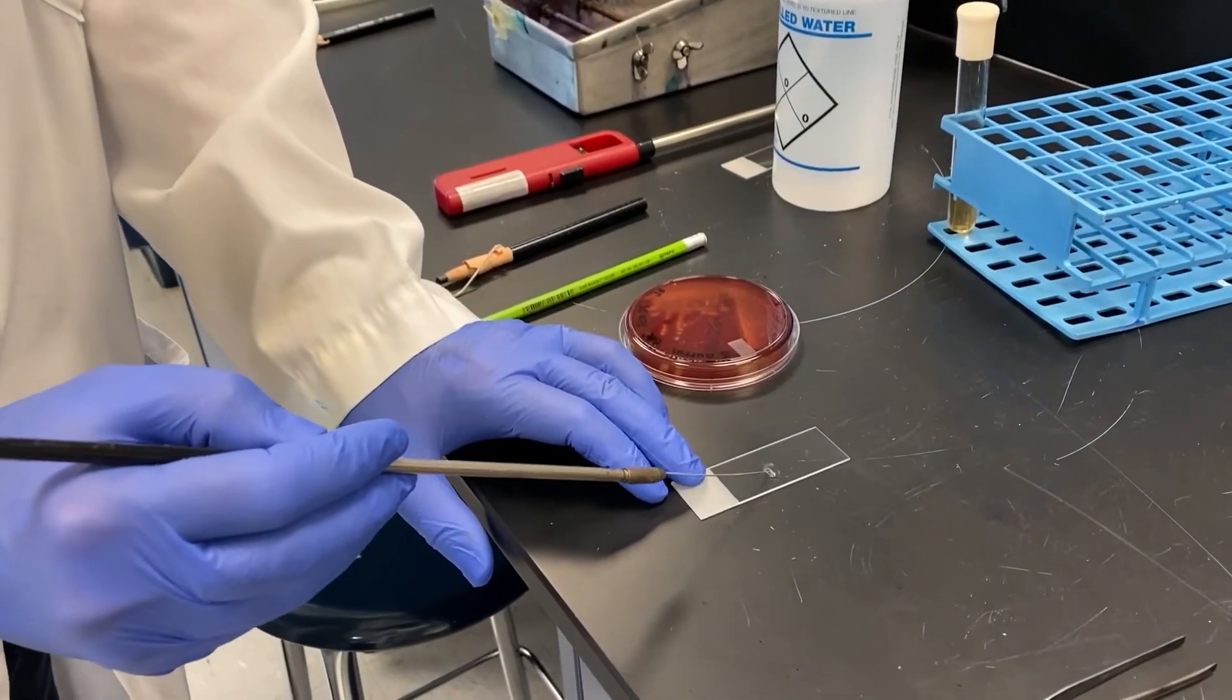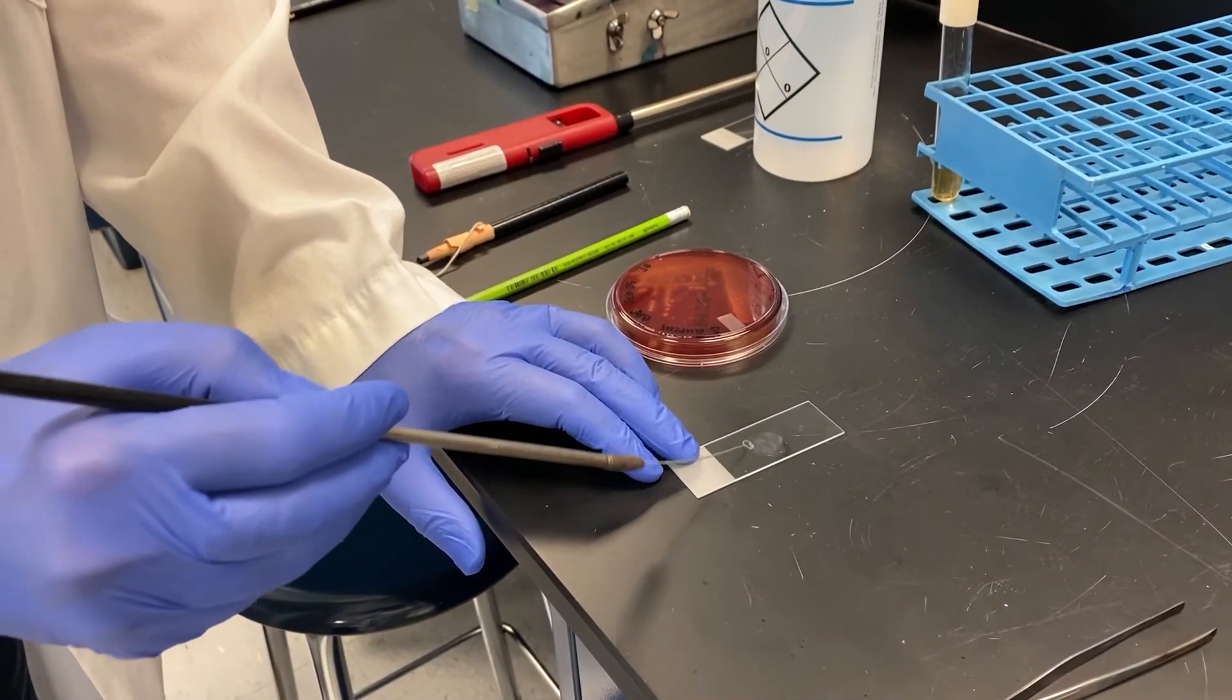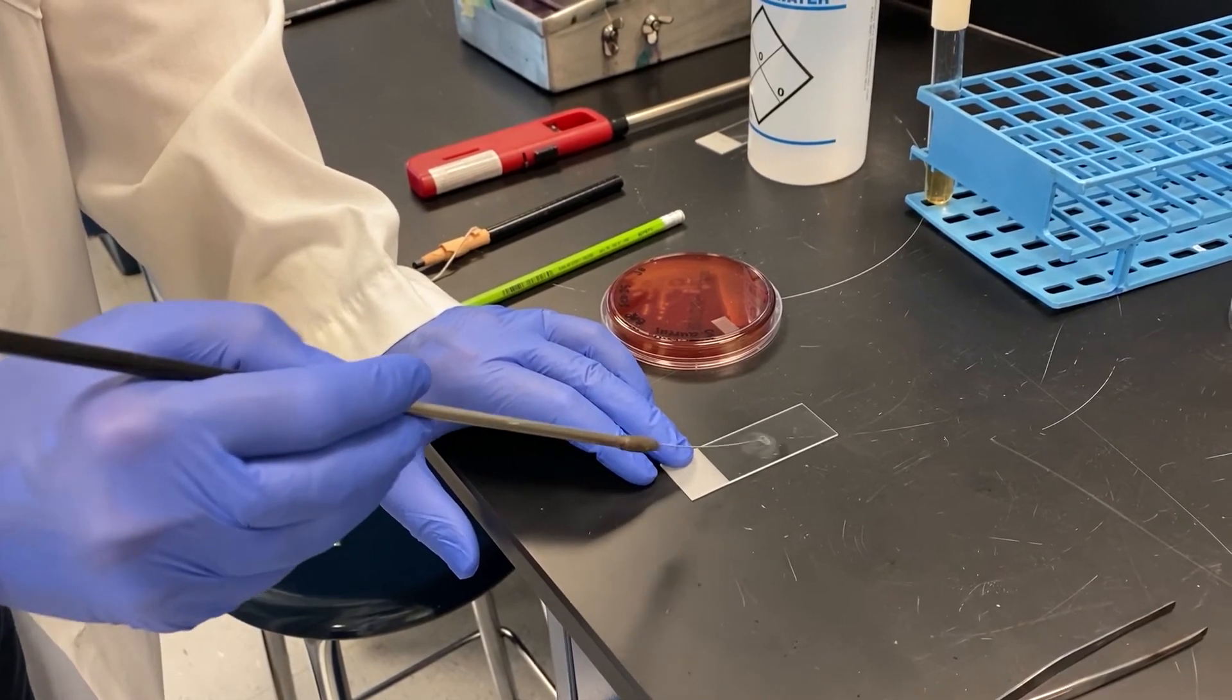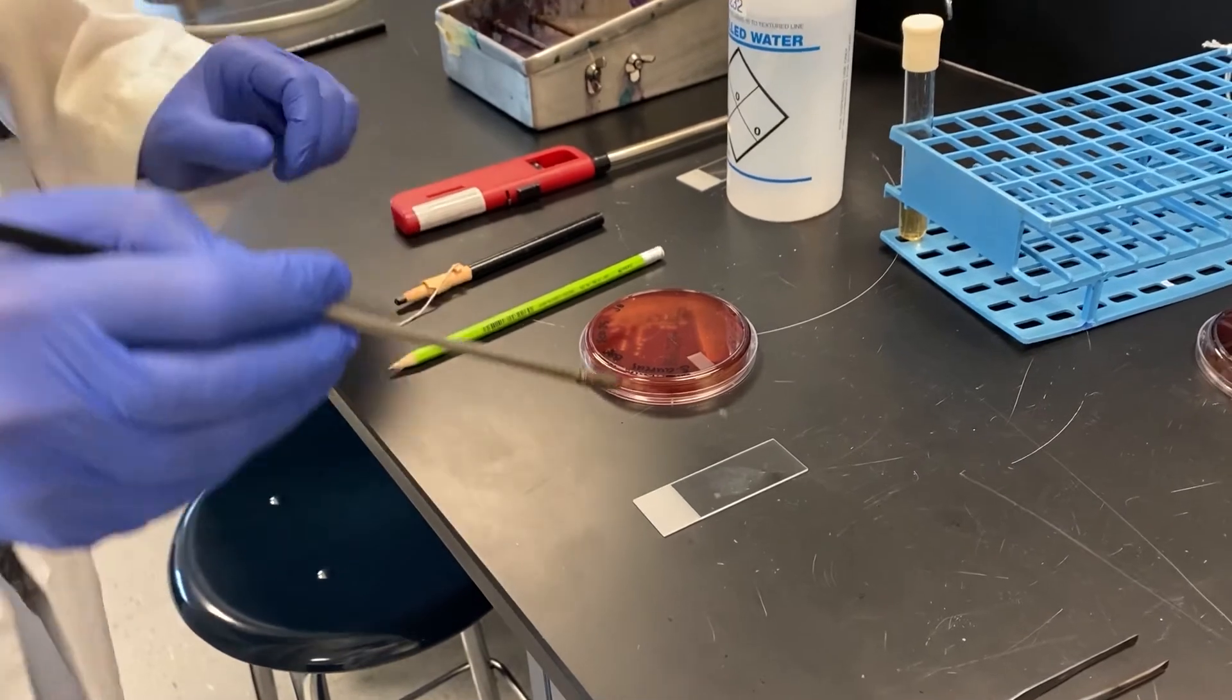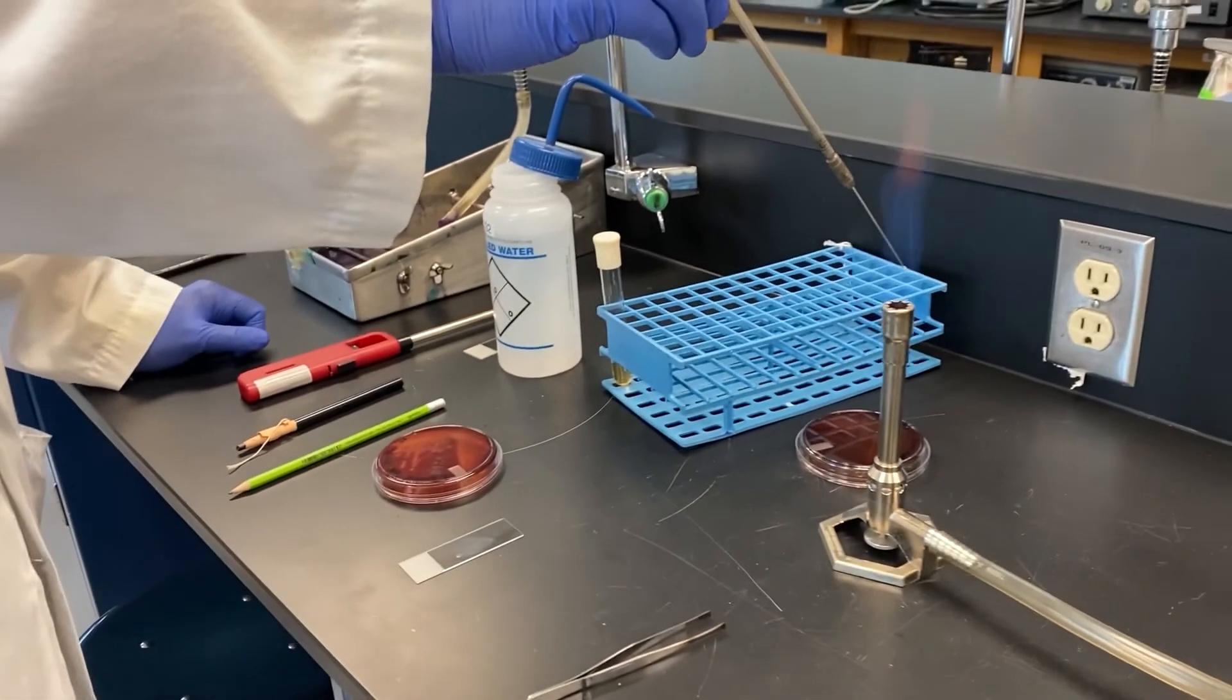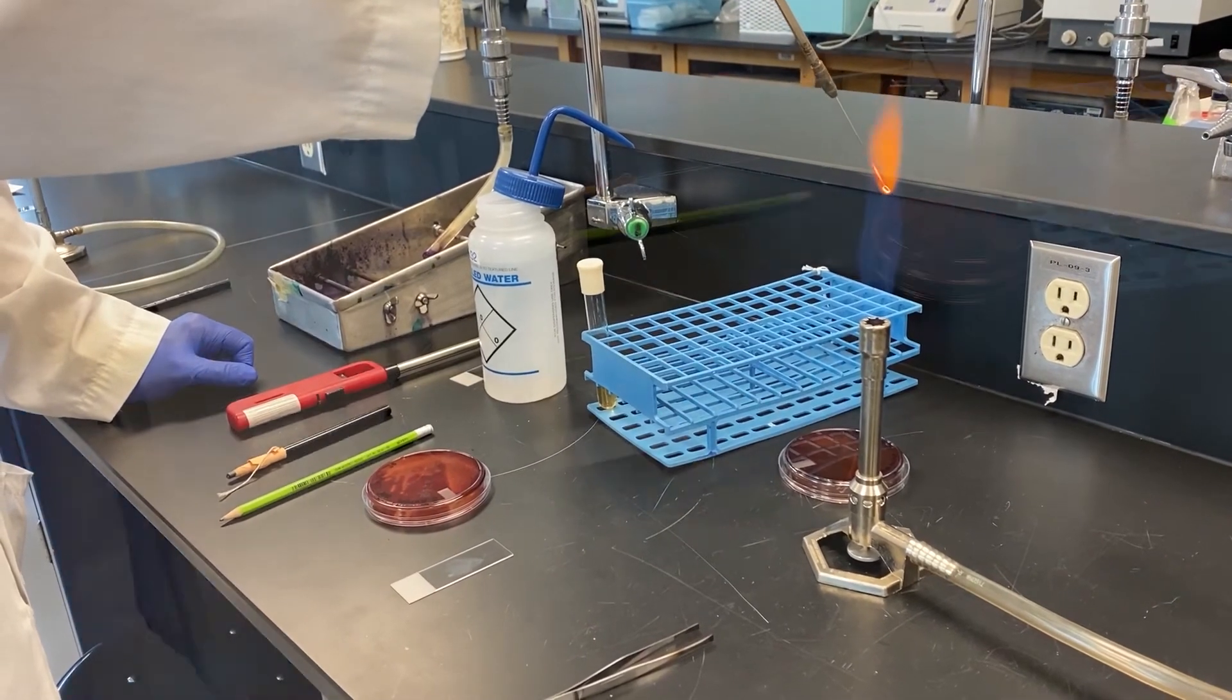Once you have your colony picked up mix it with the loop full of water that is already on the slide. Notice, unlike when preparing a smear from a broth, there is no need to draw a circle on the slide. Bacteria from a plate are much more concentrated compared to a broth culture and you can easily see the milky smear without any extra markings required.